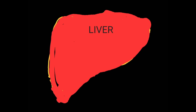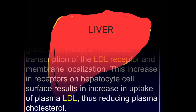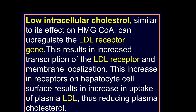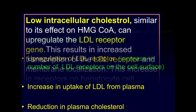Ultimately, the amount of free intracellular cholesterol will determine the amount of plasma cholesterol. Low intracellular cholesterol will increase the gene expression of the LDL receptor on the surface of hepatocytes. When there are more LDL receptors on the surface of hepatocytes, more LDL particles can be endocytosed from the plasma, thus reducing their concentration and eventually reducing the total amount of plasma cholesterol.